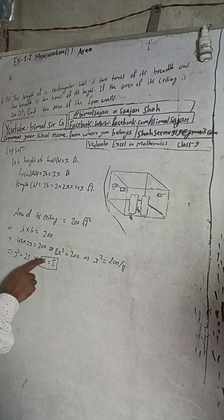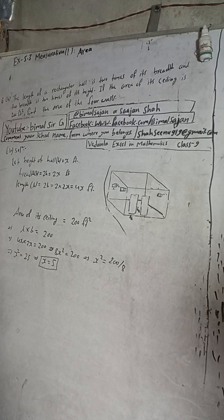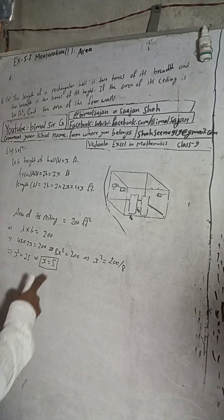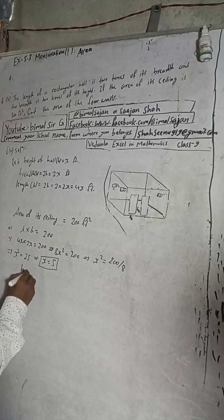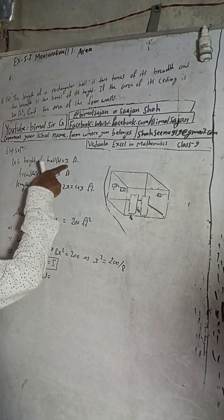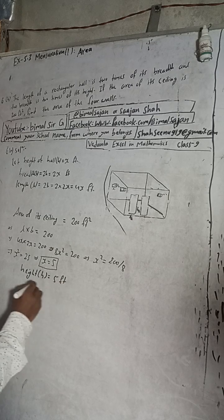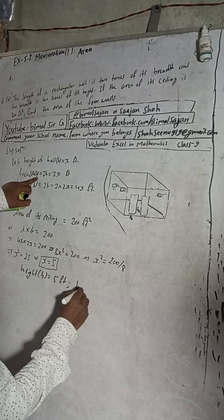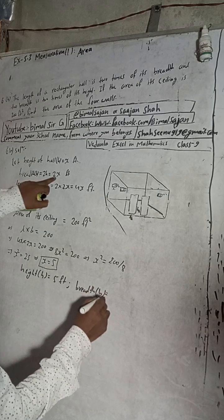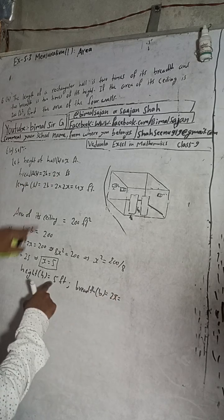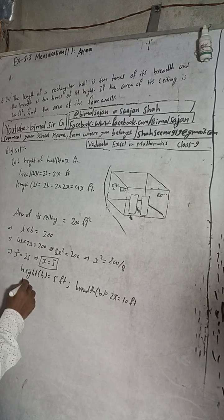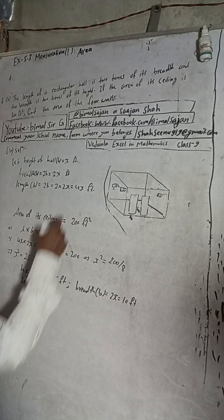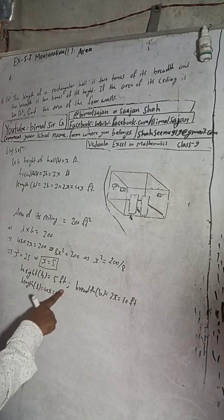This implies x equals the square root of 25, that is x equals 5. We got the x value. Now height x equals 5 feet. Breadth equals 2x, so 2 times 5 equals 10 feet. And length equals 4x, so 4 times 5 equals 20 feet.